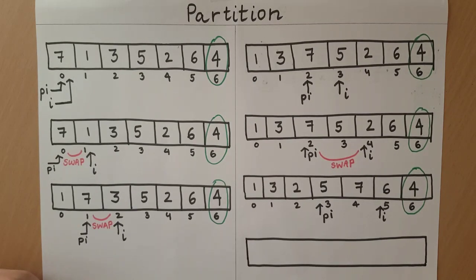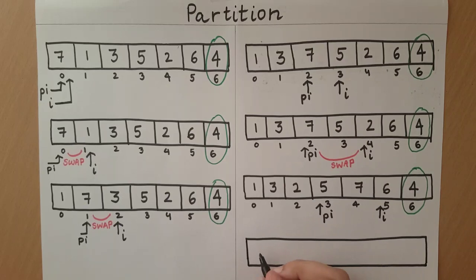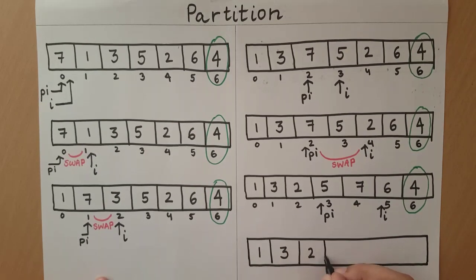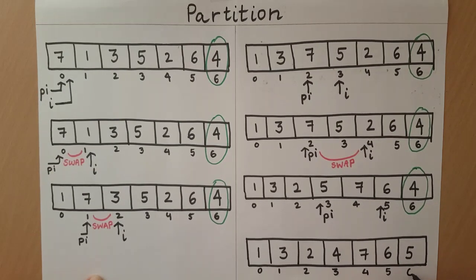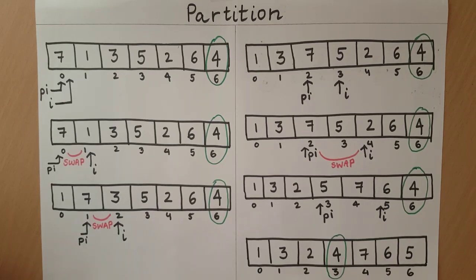When I reaches the pivot, it means that every element in the array does not violate the condition that PI is the correct index. Therefore, the array is now ready for PI to be swapped with the pivot. So now I will swap the element at PI with the pivot. As you can see, 4 has come to its correct position, where all the elements less than 4 appear to its left and all the elements greater than 4 appear to its right. This partition algorithm will return the index of the pivot.